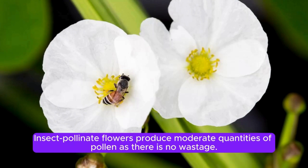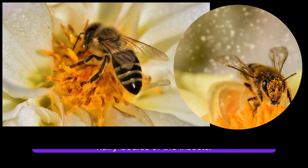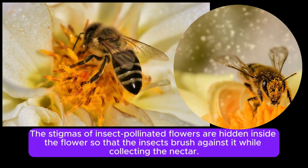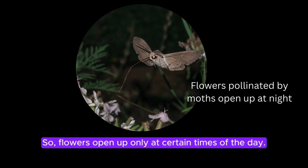Insect-pollinated flowers produce moderate quantities of pollen as there is no wastage. Pollens are sticky and spiky so that they can stick to the hairy bodies of the insects. The stigmas of insect-pollinated flowers are hidden inside the flower so that the insects brush against them while collecting the nectar. Pollination in insect-pollinated flowers occurs only when the insects are active, so flowers open up only at certain times of the day.